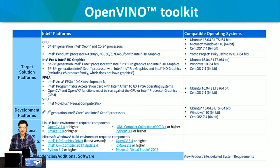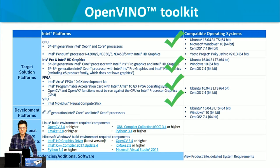Here is some Intel platform description. For CPU, it supports the 6th to 8th generation Intel Xeon and Core i processors. For the integrated GPU, it supports Intel Iris Pro and Intel HD Graphics. For FPGA, the Mustang F100-A10 uses the Intel Arria 10 FPGA. For VPU, it supports the Intel Movidius Neural Compute Stick.